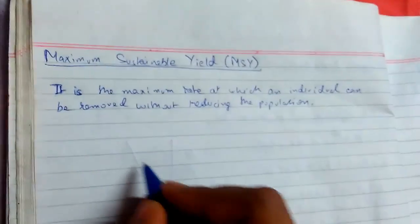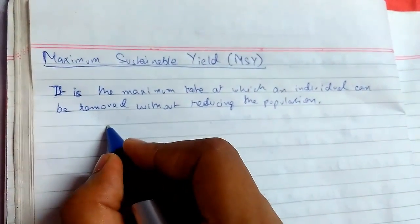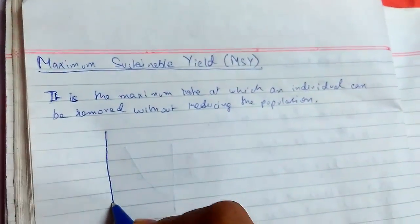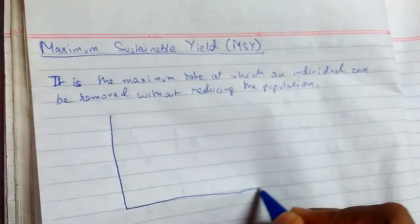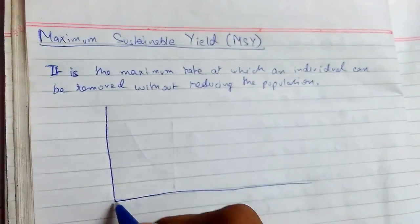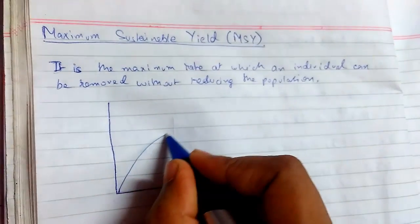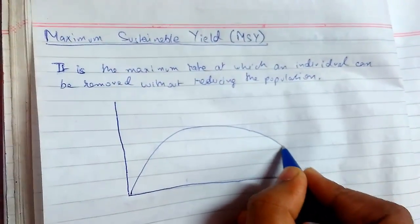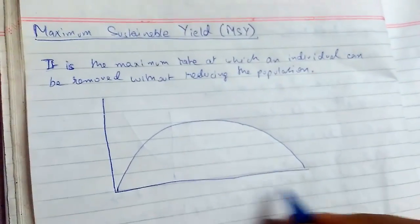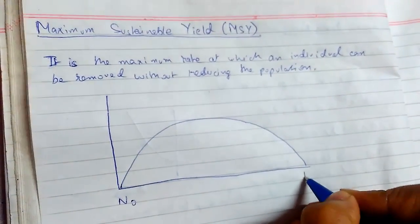So there is a graph that defines this thing. So let me draw it. So this is N₀, this is K.